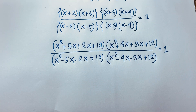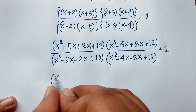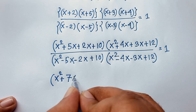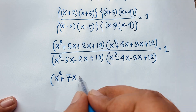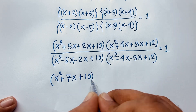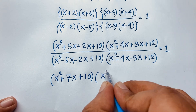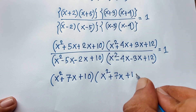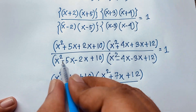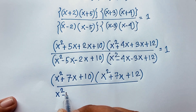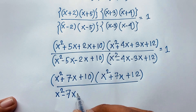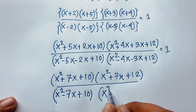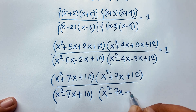Now you can see here: the numerator is (x² + 7x + 10)(x² + 7x + 12), and the denominator is (x² - 7x + 10)(x² - 7x + 12), all equal to 1.